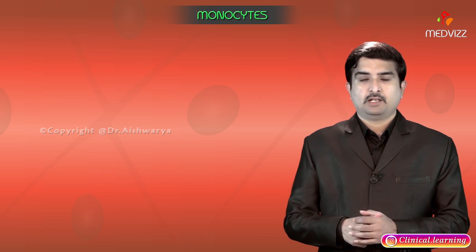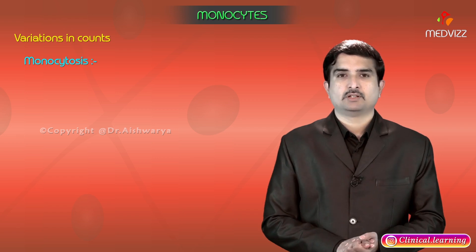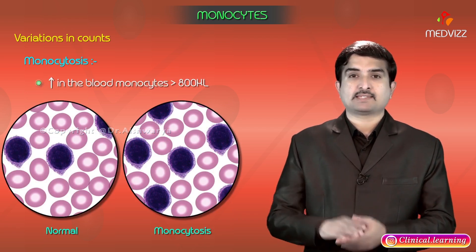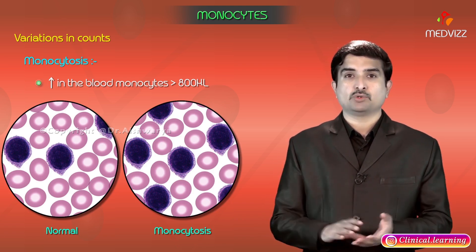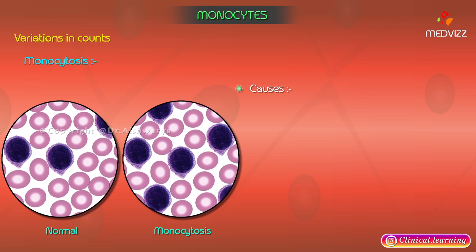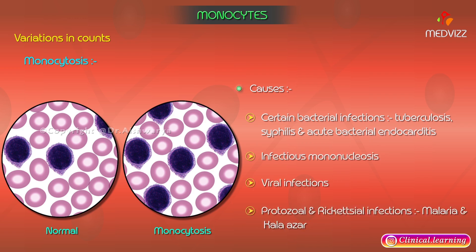Let us talk about variations in counts. Monocytosis is an increase in the number of blood monocytes above 800 per microliter. The causes of monocytosis include certain bacterial infections such as tuberculosis, syphilis, and acute bacterial endocarditis, infectious mononucleosis, viral infections, and protozoal and rickettsial infections such as malaria and kala azar.